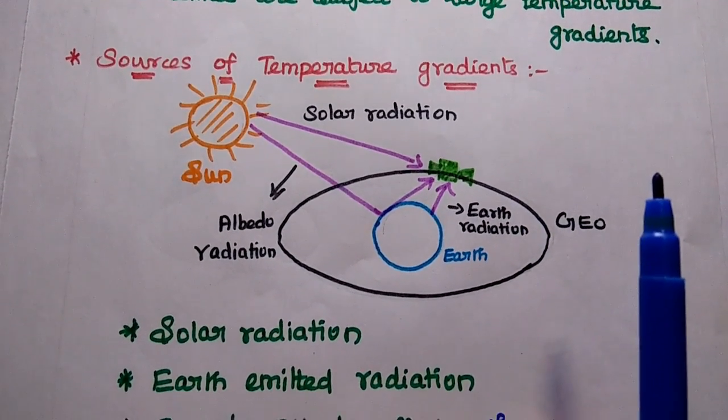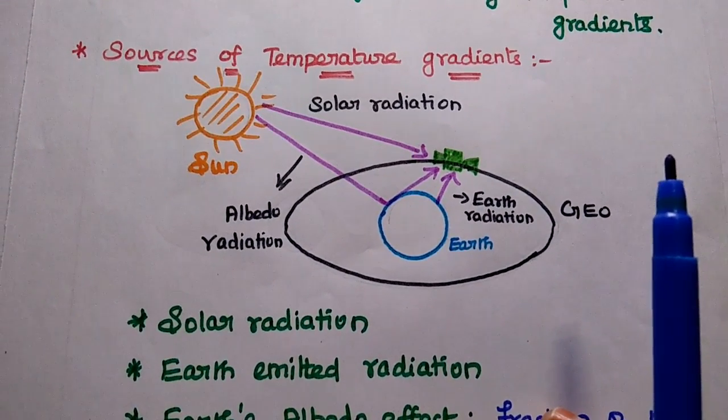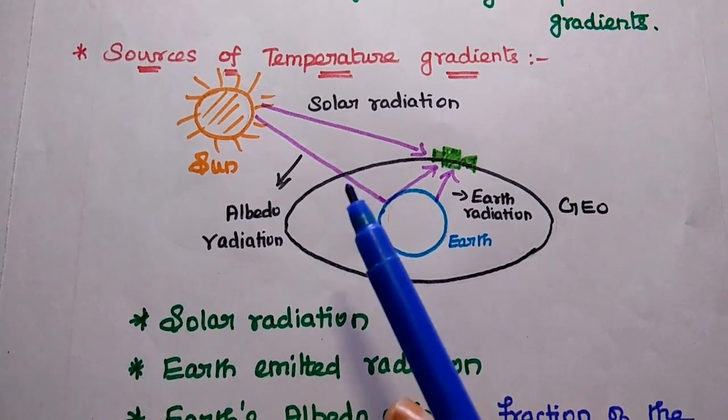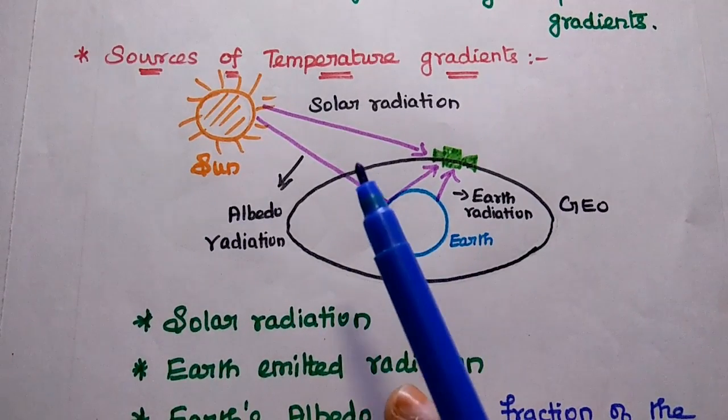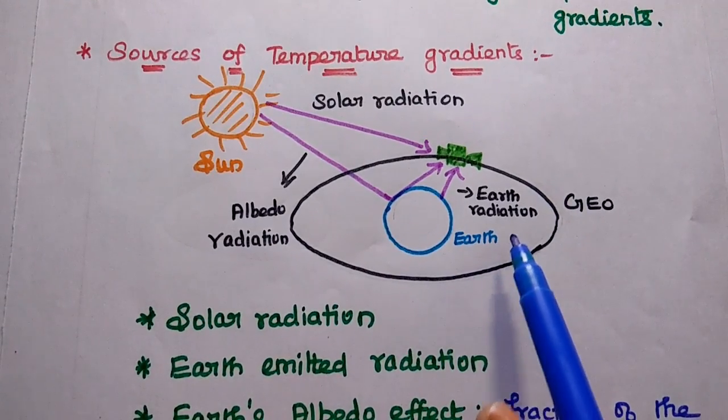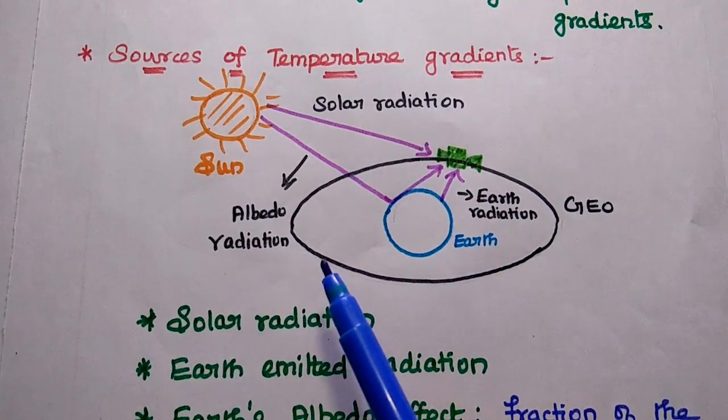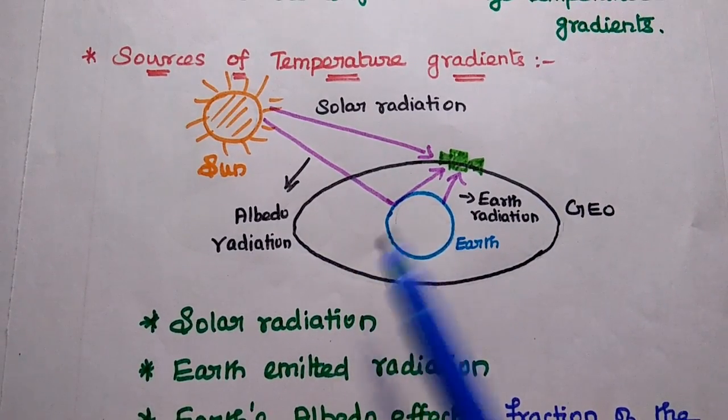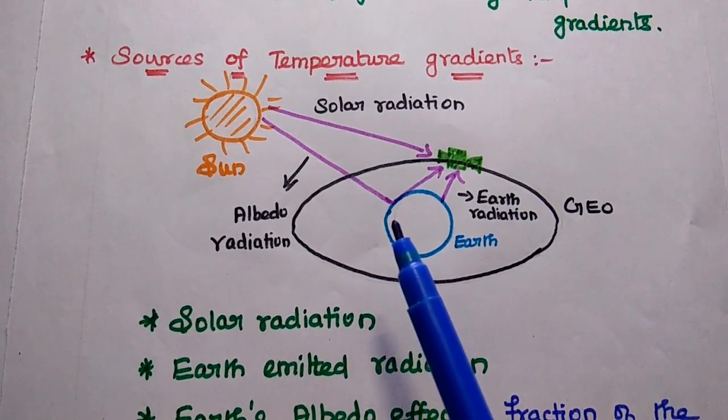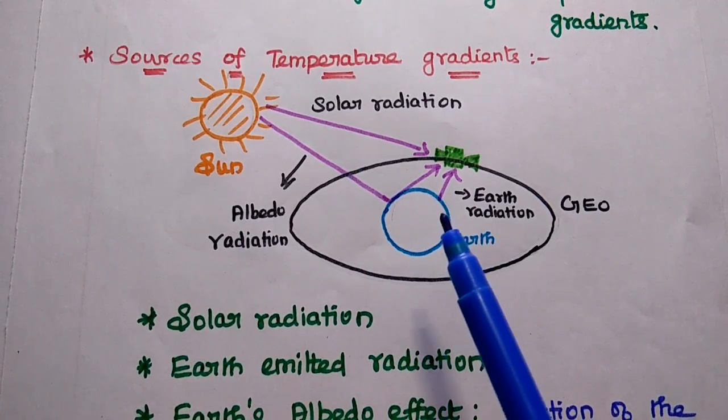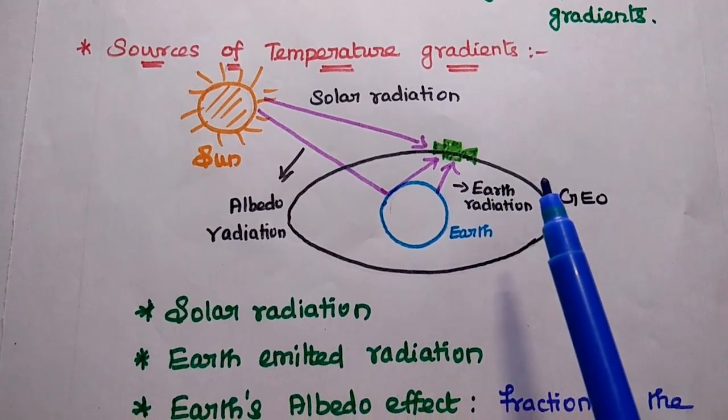There are four important sources of temperature gradients. One is solar radiation—thermal radiation directly from the Sun. The second is Earth radiation. The third is albedo radiation. What is albedo? It is a fraction of the Sun's thermal radiation falling on Earth and getting reflected to the satellite.